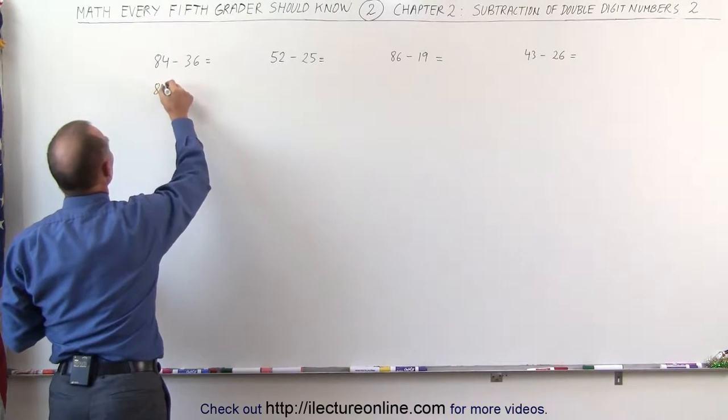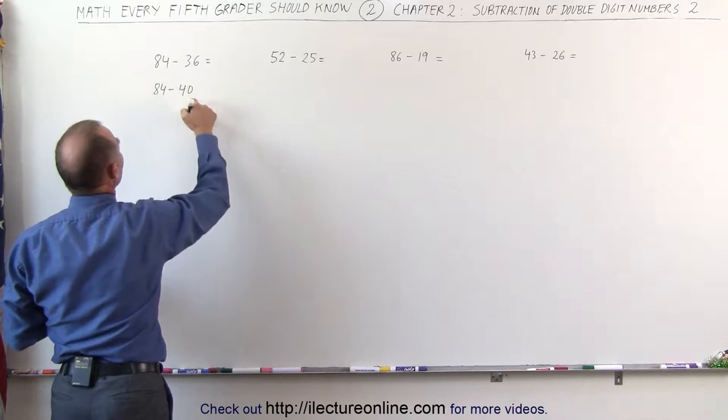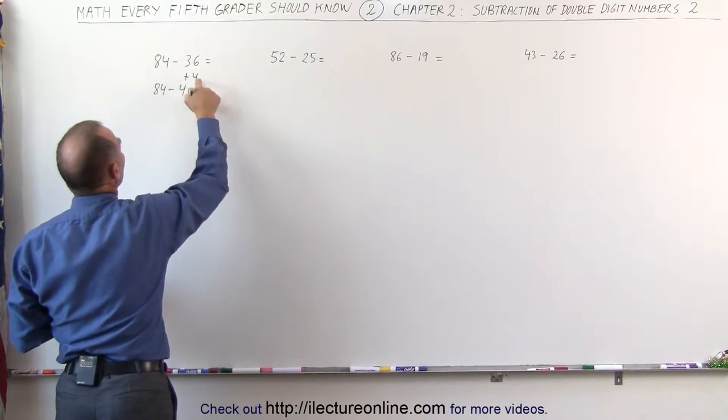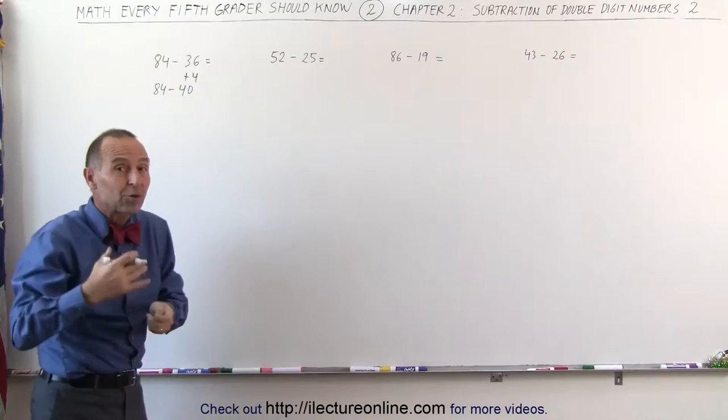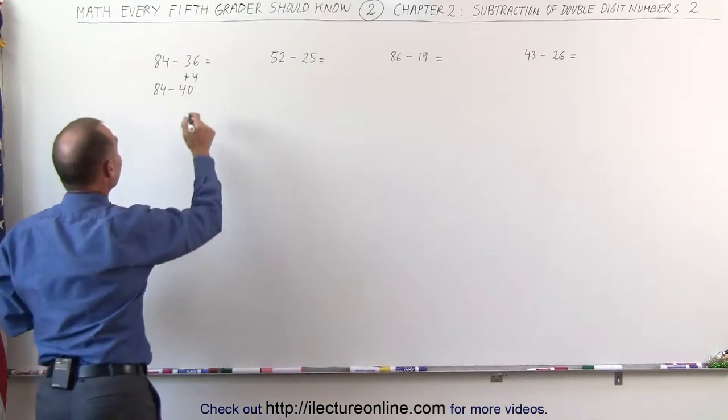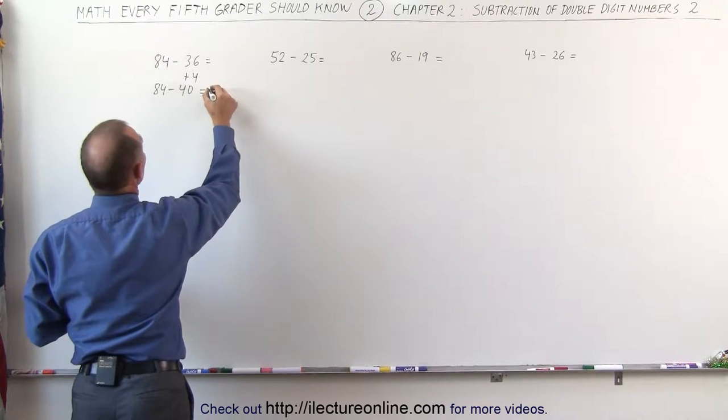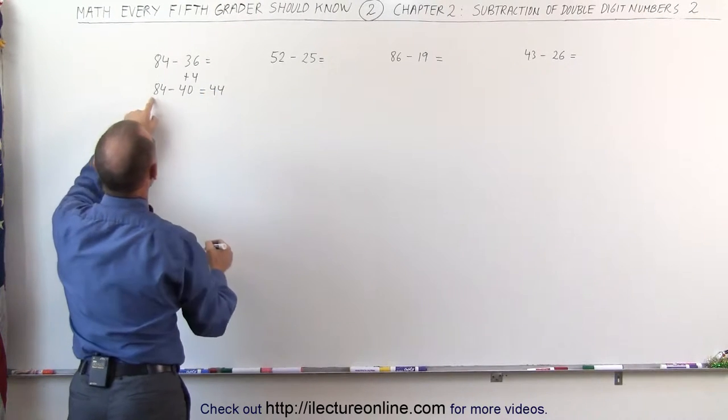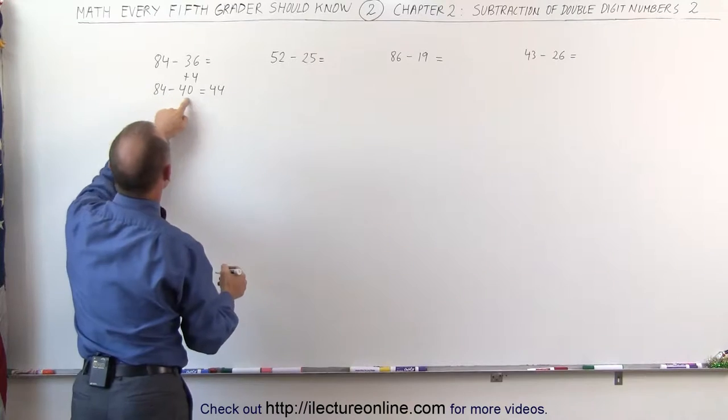I'm going to take 84 and subtract 40 from that, which means I added 4 to this number. In other words, I'm subtracting 4 more than I should. But that's an easy number to subtract, because I know that 84 minus 40 is equal to 44. 8 minus 4 is 4, 4 minus 0 is 4.